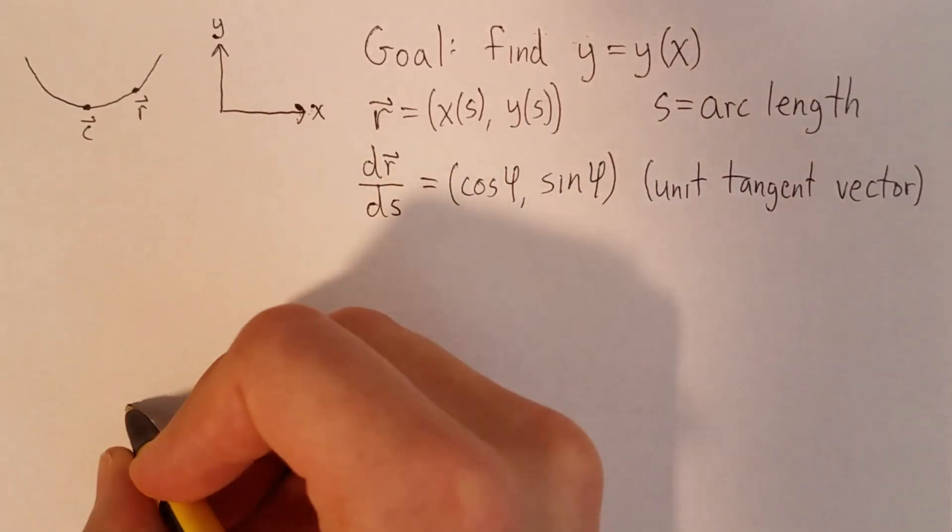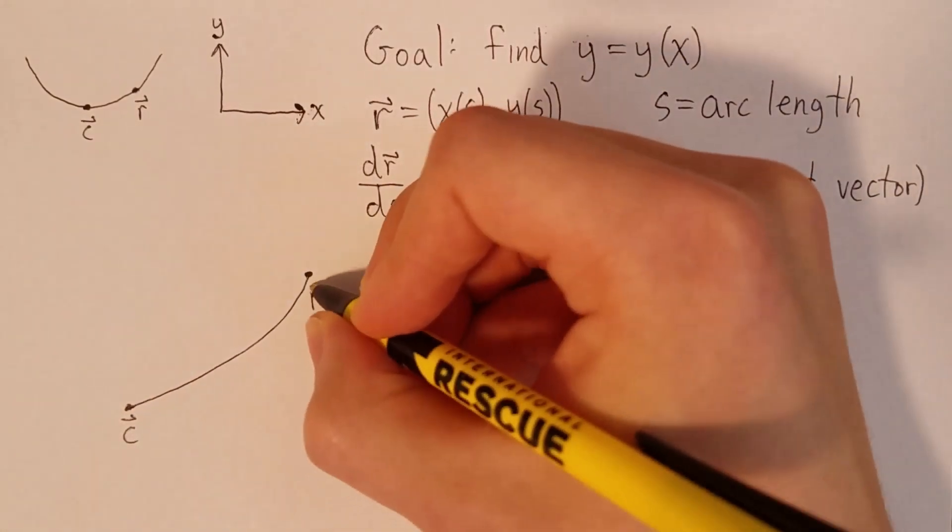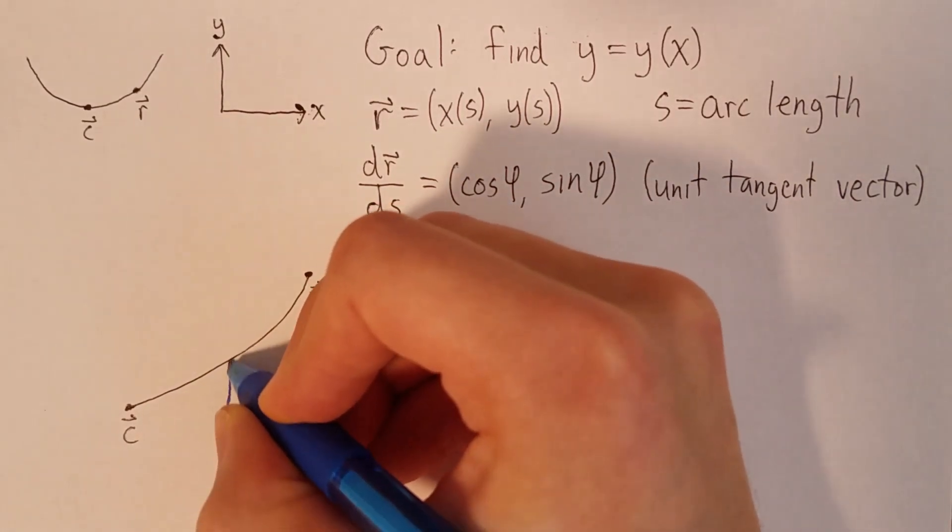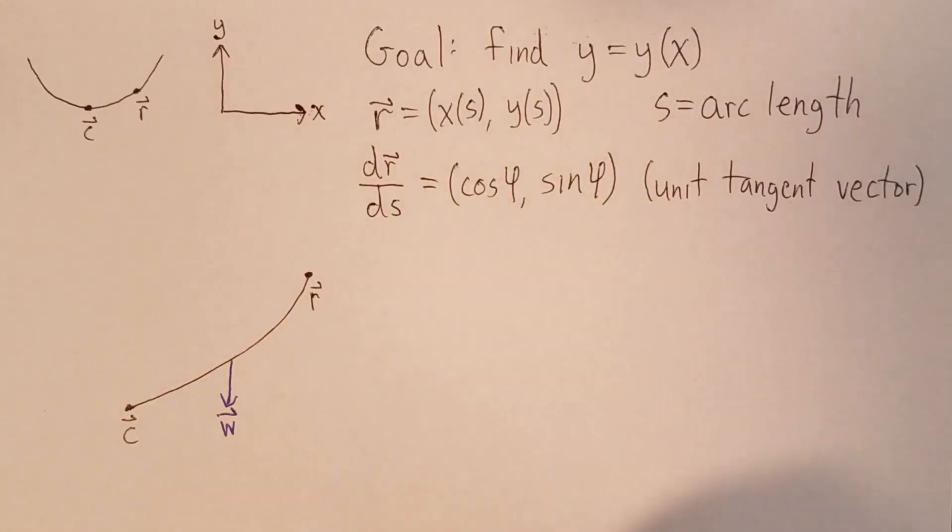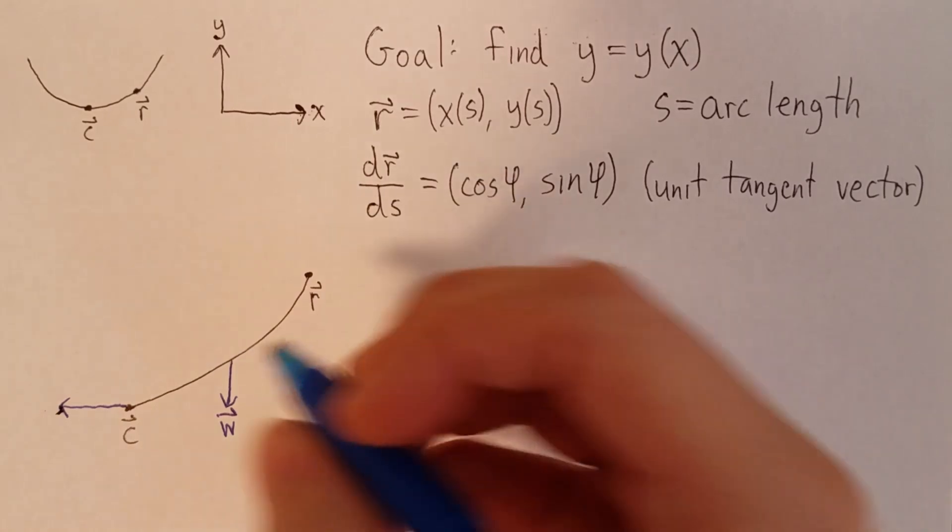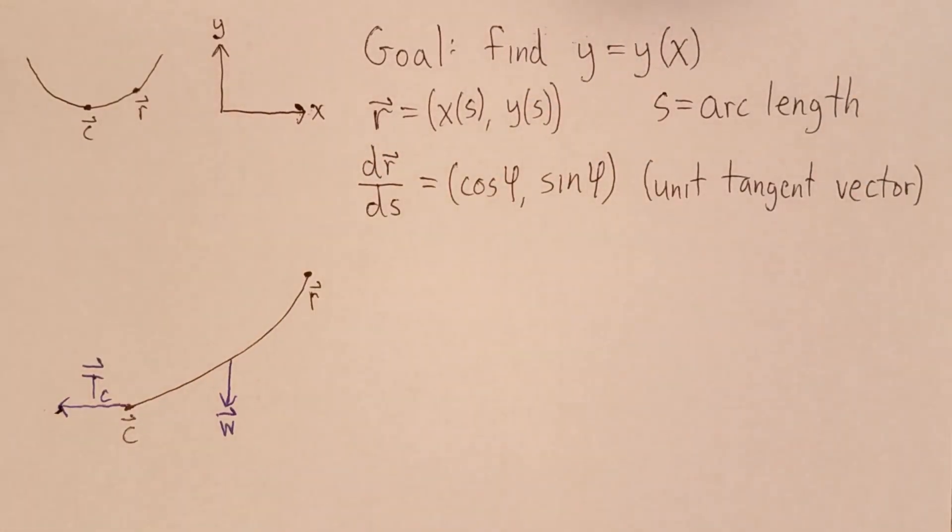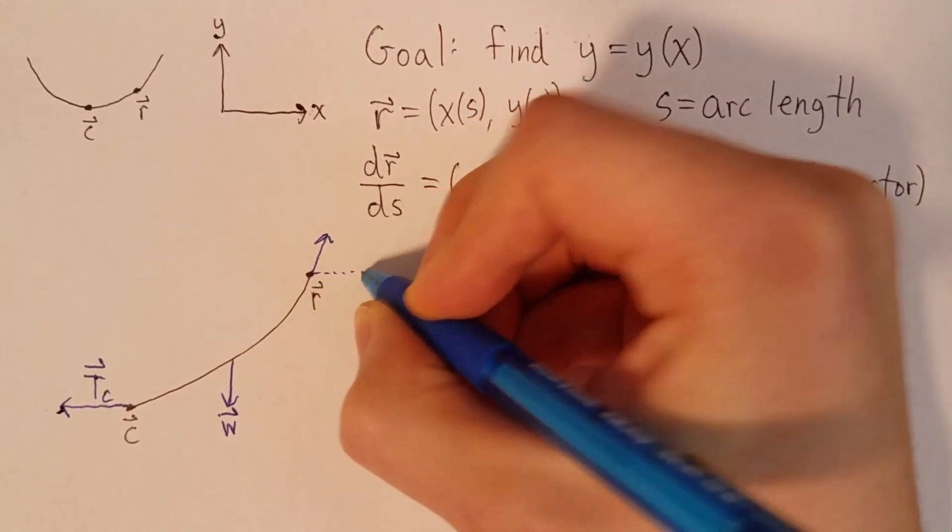So let's zoom in on the part of the string just from c to r, and take a look at the forces that are acting on it. We have, first of all, the weight, which I'll write as w. That's the force of gravity acting vertically downwards on the string. We have a tension force, Tc, acting in the negative x direction at point c. And at r, we have another tension force, Tr, which acts at the angle φ.